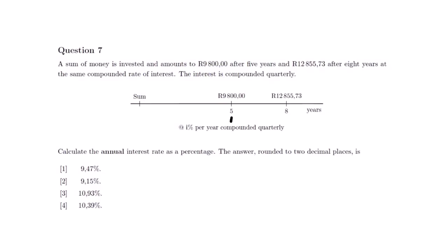Let us go back to our question. We are looking for the annual interest rate. We cannot use the full timeline from the start because we don't have the initial sum. But since we know the amount after 5 years and after 8 years at the same compounded rate of interest, we can use $9,800 as our present value and $12,855.73 as our future value. From 5 years to 8 years, we have 3 years.